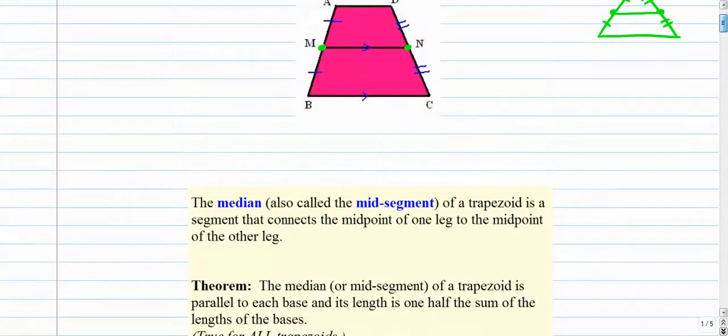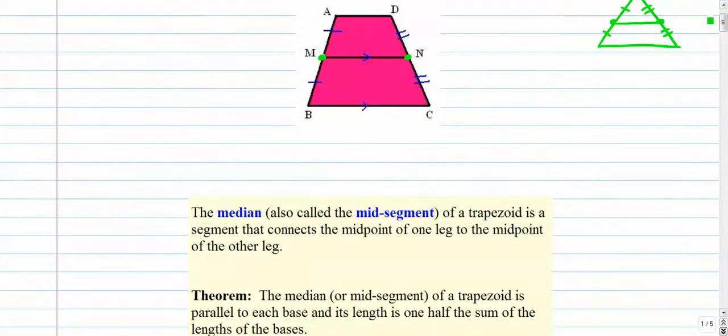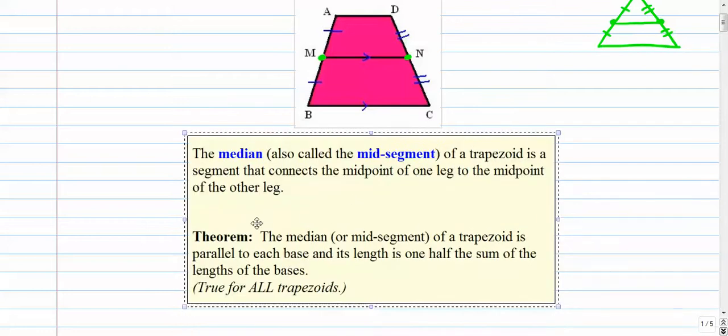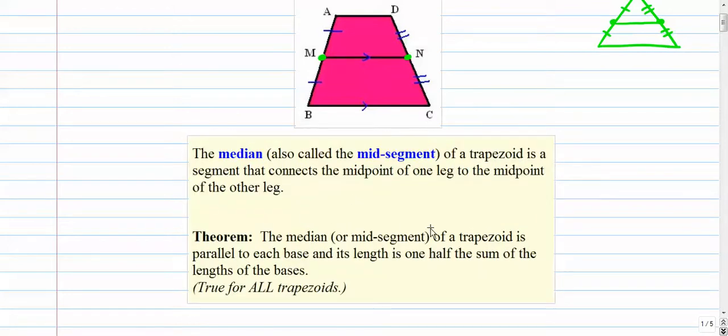And let's see, the theorem around mid-segments is pretty interesting. I've got the median or the mid-segment of a trapezoid is parallel to each base. So that's pretty important. It means this is parallel to everything. They're all parallel.